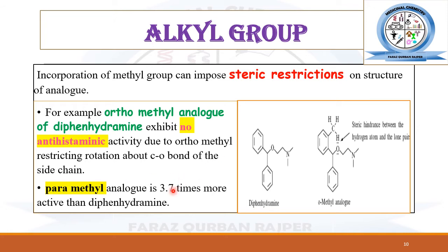On the other hand, if the methyl group is substituted at the para position of diphenhydramine, there is no steric hindrance because there is no direct contact between the hydrogen atom of the methyl and the carbonyl oxygen. This newly synthesized para-methyl analog has 3.7 times greater potency in comparison to the active diphenhydramine.